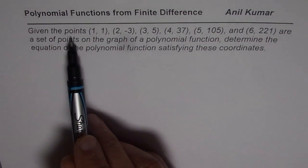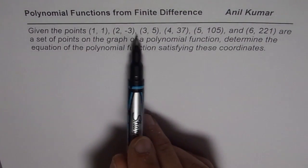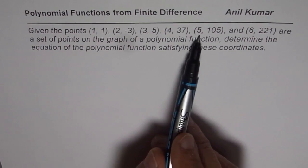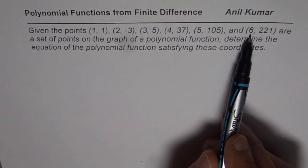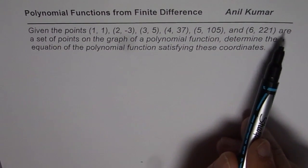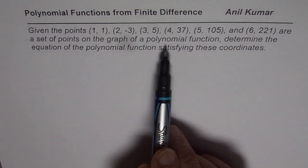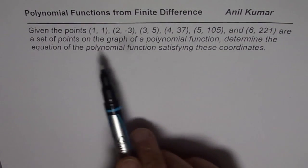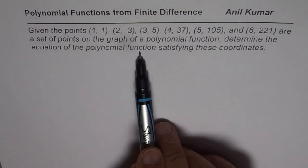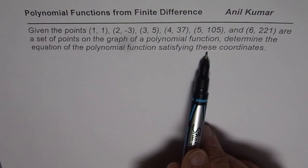The question here is, given the points (1,1), (2,-3), (3,5), (4,37), (5,105), and (6,221) are a set of points on the graph of a polynomial function, determine the equation of the polynomial function satisfying these conditions.